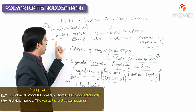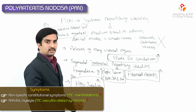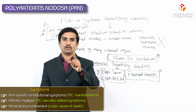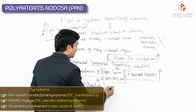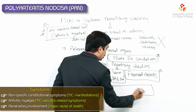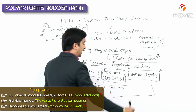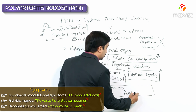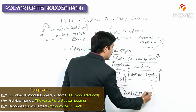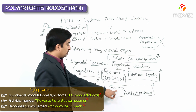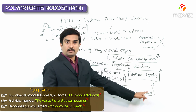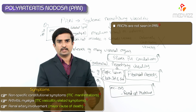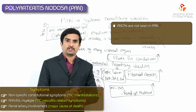Renal artery involvement is the most common cause of death in Polyarteritis Nodosa. Also important: anti-neutrophilic cytoplasmic antibodies (ANCA) are not seen in PAN.